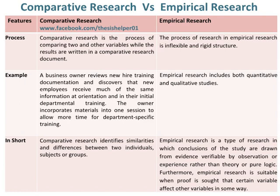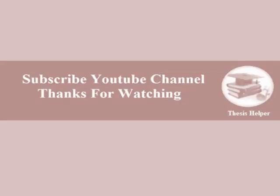In short, comparative research identifies similarities and differences between two individuals, subjects, or groups. Whereas empirical research is a type of research in which conclusions of the study are drawn from evidence verifiable by observation or experience rather than theory or pure logic. Furthermore, empirical research is suitable when proof is sought that certain variables affect other variables in some way.